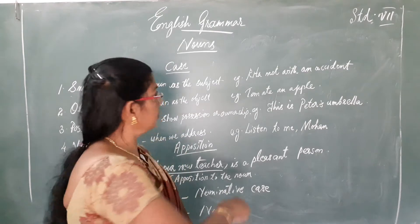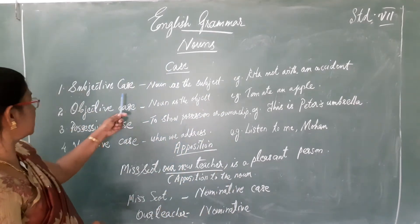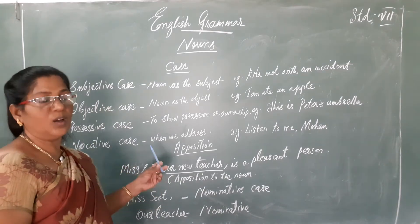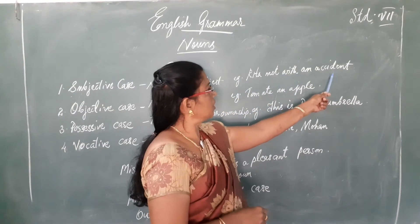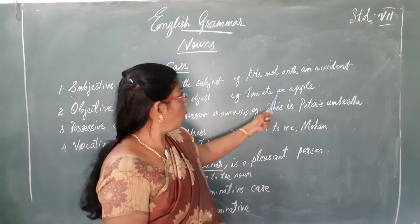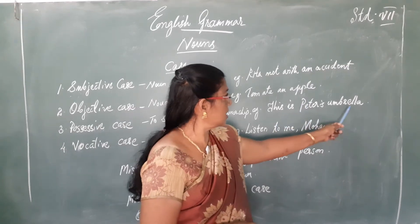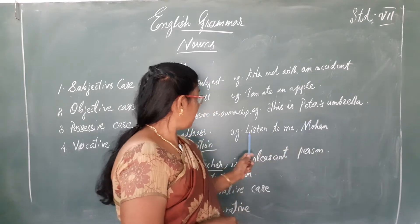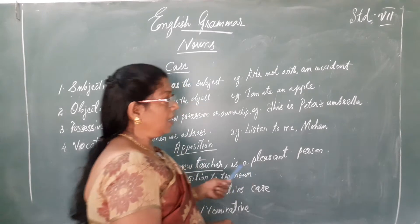So, did you understand about the four different types of cases? Subjective case, objective case, possessive case, and vocative case. In the subjective case: 'Rita met with an accident' — the noun Rita is in the subjective case. 'Tom ate an apple' — apple is in the objective case. 'This is Peter's umbrella' — Peter's is in the possessive case. And 'Listen to me, Mohan' — Mohan is in the vocative case.